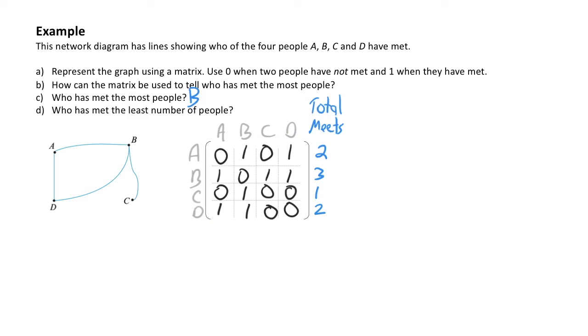We can see that person B has met the most number of people. And if I go and have a look at my diagram, I can see those three connections are the three lines that are going from B to other objects within the network diagram. So that confirms my answer that I obtained from the adjacency matrix.